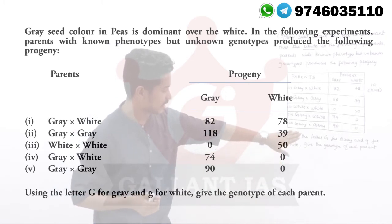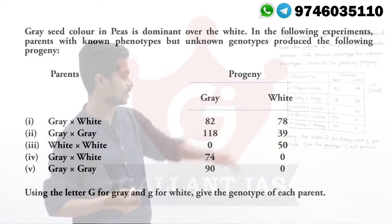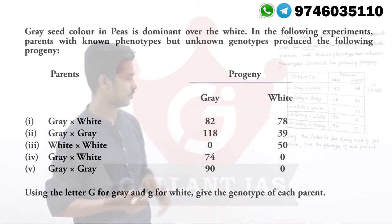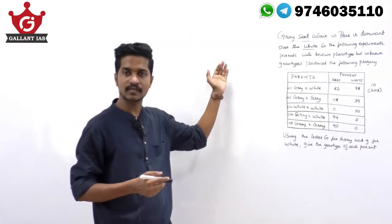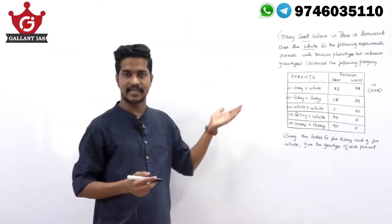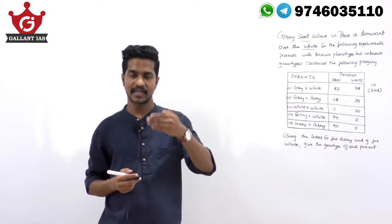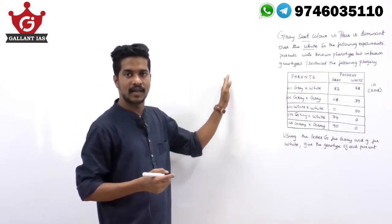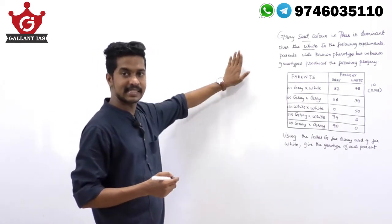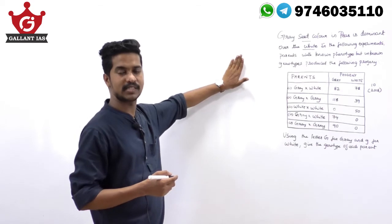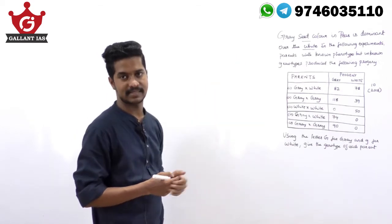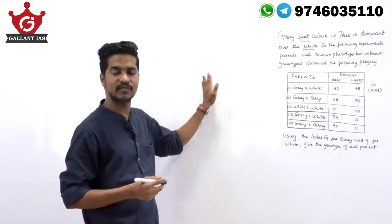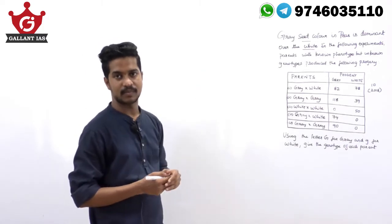Using the letter capital G for gray and small g for white, give the genotype of each parent. This is a 10-mark question, so maximum you get two sides to answer. Since it is a 10-mark question, you have to complete this question within seven minutes. Before writing the answer, you have to identify the key terms of that particular question.